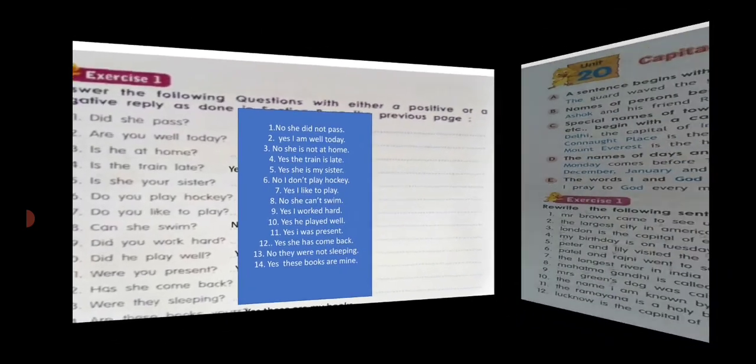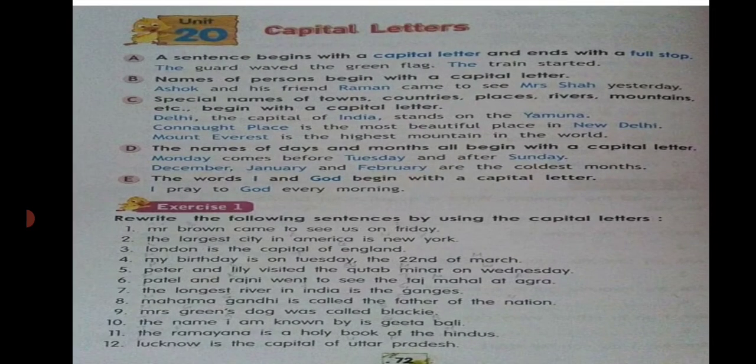Now let us move to the next unit: capital letters. A sentence begins with a capital letter and ends with a full stop. For example: 'The guard waved the green flag. The train started.' — 'The' begins with a capital letter T and ends with a full stop. Names of persons begin with a capital letter: 'Ashok and his friend Raman came to see Mrs. Shah yesterday.' Can you see the names of the persons are in capital letters?